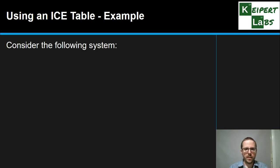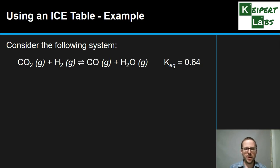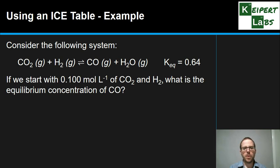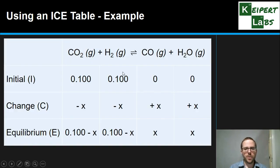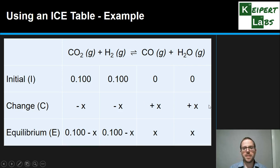For Example 2, carbon dioxide and hydrogen react to form carbon monoxide and water. K = 0.64, meaning roughly equal amounts of reactants and products at equilibrium. Starting with 0.1 mol/L of both CO2 and H2, we want to find the equilibrium concentration of CO. We set up an ICE table with four columns. Initial concentrations of reactants are 0.1 mol/L each, products start at zero. Both reactants decrease by X, and both products increase by X, giving equilibrium concentrations of 0.1 − X for reactants and X for products.